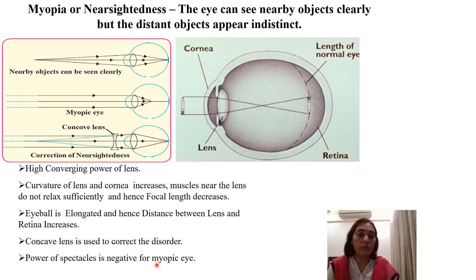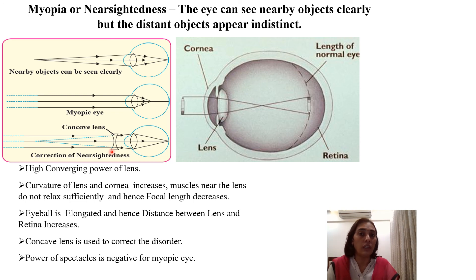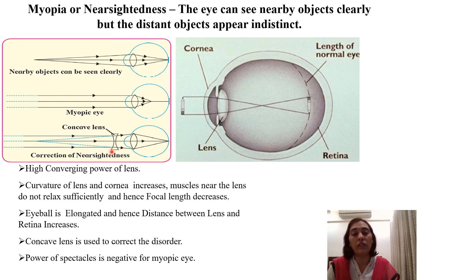The power of spectacles is negative for the myopic eye. Since we use a concave lens, the focal length is negative — we take F1 on the left side of the optical center. The power of the lens is given by P = 1/F, the reciprocal of focal length. Since the focal length is negative, the power of the lens will also be negative. So the power of spectacles is negative for the myopic eye.